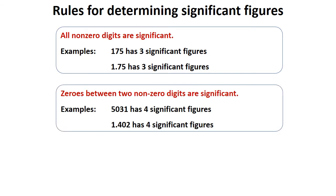Second rule is: zeros between two non-zero digits are significant. For example, in 5031, it has four significant figures, and in 1.402, it also has four significant figures. So the zeros between two non-zero digits are significant.